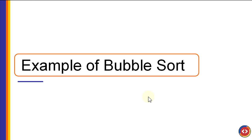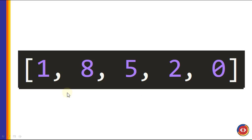Let's see a visual example of bubble sorting. This is our initial list — it's not sorted in any particular order. We have these elements: 1, 8, 5, 2, and 0. Let's see what the algorithm will do.